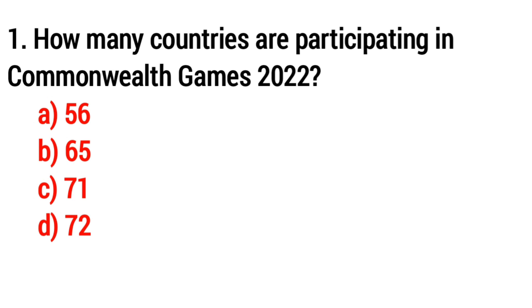The first question: how many countries are participating in Commonwealth Games 2022? Option A: 56, option B: 65, option C: 71, option D: 72. The correct answer is option D, 72.